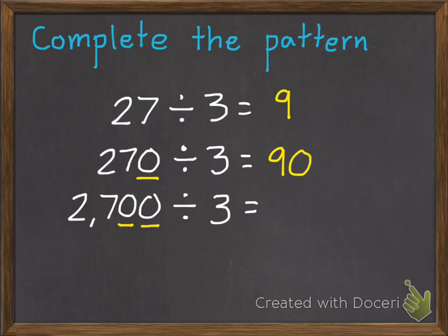And for our third part of the pattern, it has two 0s, so we're going to have that 9 with two 0s, 900. So as we increase by 10 and by 100, our answer increases by 10 and 100.